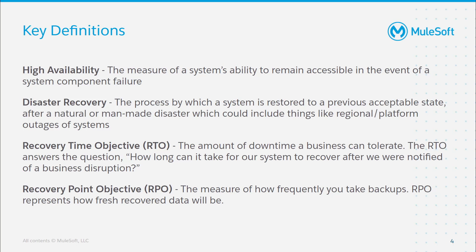Conversely, disaster recovery refers to whether an entire system can be recovered if it goes down. Generally, this failure is due to some kind of natural or man-made disaster, like a flood or a fire, that will completely destroy a data center. The last two definitions — recovery time objective, often referred to as RTO, and recovery point objective, or RPO — refer to different measures of tolerance a business has for failure. RTO measures how long it takes for a system to recover, while RPO measures how accurate the recovery will be. Later on, we will talk about the specific recovery objectives for MuleSoft and CloudHub.